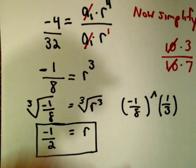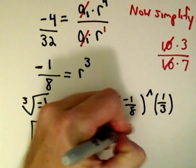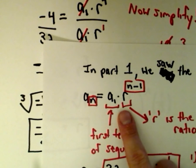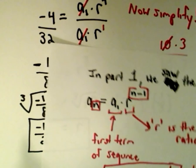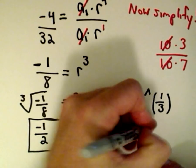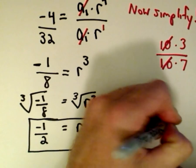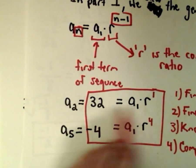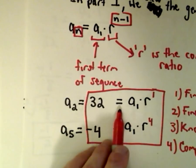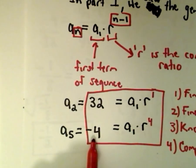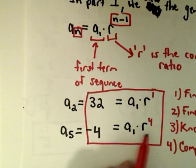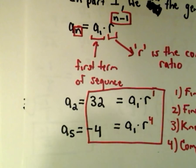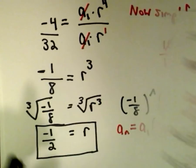We've now got our r value. Generically our nth term is a sub n equals a sub 1 times negative 1 half raised to the n minus 1 power. Now I can use either of the two original equations to find a sub 1. I prefer using the one with the smaller exponent — 32 equals a sub 1 times r — since that makes the arithmetic easier by hand.